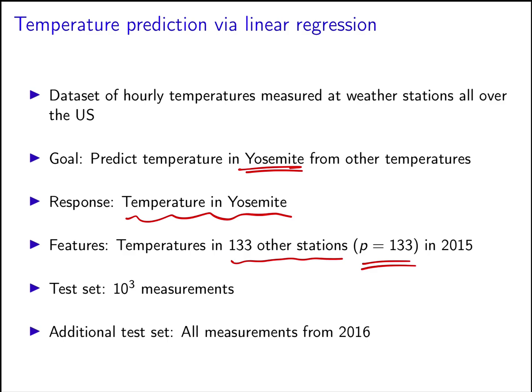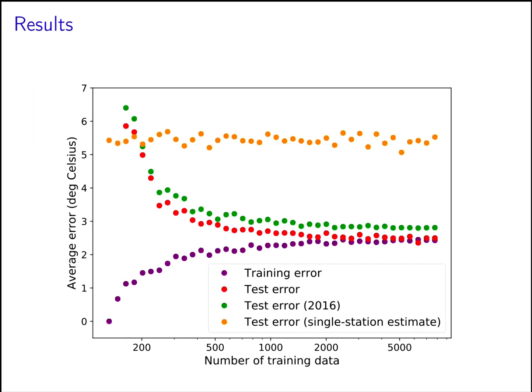Our training and test set will be data from 2015 — we're going to hold out a thousand measurements randomly to test. I'm also going to have an additional test set with measurements from 2016, to see if our linear model is still valid in that other year, even though climate shifts could make it less precise. This showcases that you often want held-out data that is really held out. Up here, I'm showing what happens if you just estimate the temperature in Yosemite using the single station closest to Yosemite in the training set, which is a naive estimate that gives an error of about five degrees Celsius.